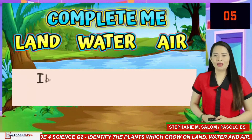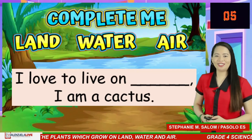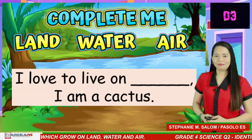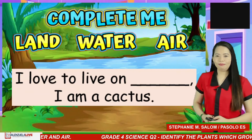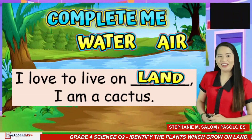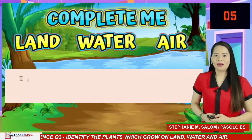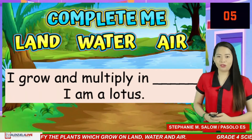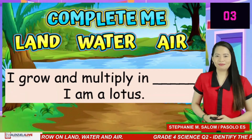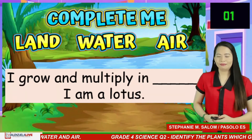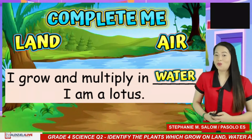Next: I grow and multiply in blank. I am a cactus. If your answer is land — amazing! Next: I grow and multiply in blank. I am a lotus. If your answer is water — wonderful!